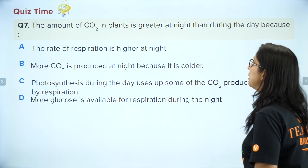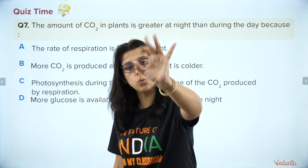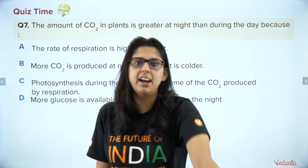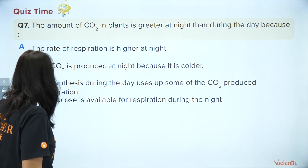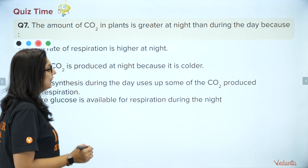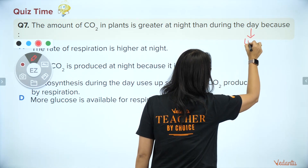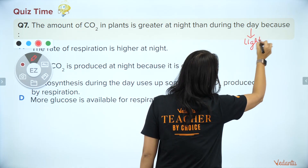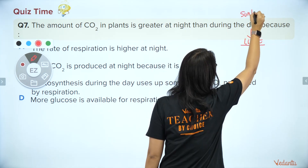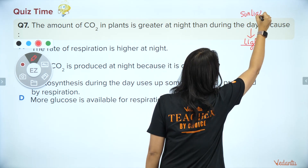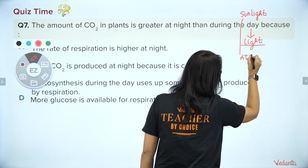Next question: the amount of CO2 in plants is greater at night than during the day. This is very related to what I've just taught you. I told you that during the light reaction, sunlight is converted into ATP and NADPH.